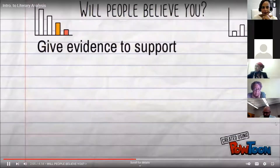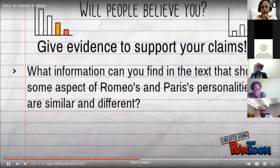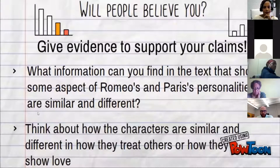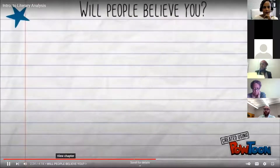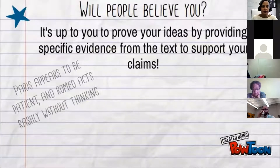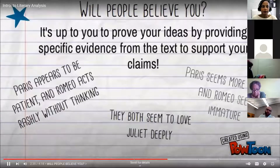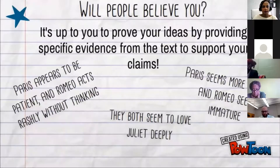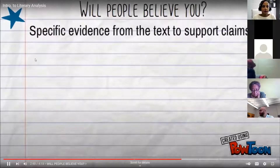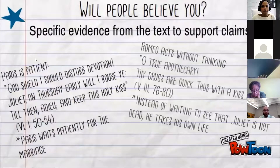Make sure to give evidence to support your claims. Ask yourself what information you can find in the text that shows some aspect of the characters' personalities — for example, how Romeo and Paris are similar and different in how they treat others or how they show love. You can also look at how the characters act. It is up to you to find evidence from the text to support your claims. Remember that you must include specific cited evidence copied directly from the text, and these must be followed by in-text citations.